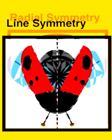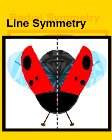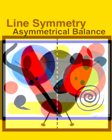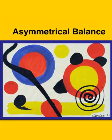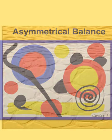If it's equal on both sides you have symmetrical balance. If it's not evenly placed around both sides, then you have asymmetrical balance.